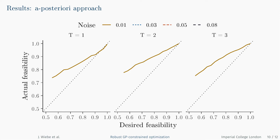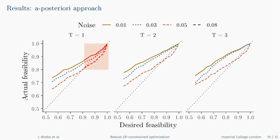The a posteriori approach leads to much less conservative solutions, as is evident from the graph. However, for instances with more noise in the data, the actual feasibility sometimes is lower than the desired feasibility. This violation of the chance constraint can occur when the warped Gaussian process, which is used to evaluate feasibility in the a posteriori approach, does not model the underlying data generating distribution well.